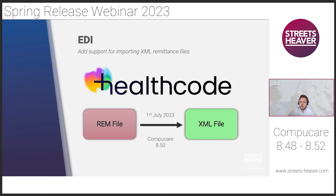We've updated how we support EDI imports into the system. Previously, when imported, they were added as a REM or REM file. Health code have discontinued this process and are moving solely to XML file import. With the decommissioning of the REM format, it's worth noting that we already export XML files to health code for EDI submission, so it's a case of matching the imported remittance file to this format. This is effective from the 1st of July 2023 and is supported from CompuCare build 850 onwards, which we released in February.